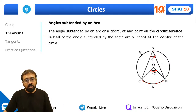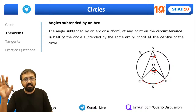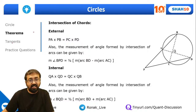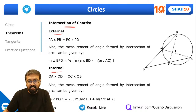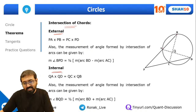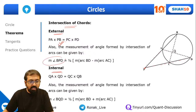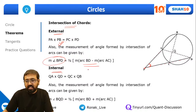I recommend watching this session two to three times so you remember all the theorems. Coming to intersection of chords: there is external and internal intersection. For external intersection, with chords AB and CD extended to meet at point P, there is a formula to find angle BPD. For internal intersection, with two chords BC and AD meeting at point Q inside the circle, the theorem states QA × QD = QB × QC.